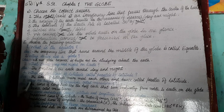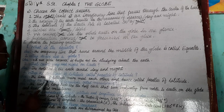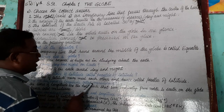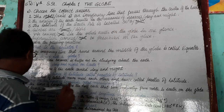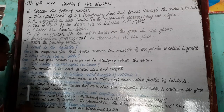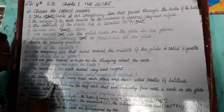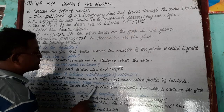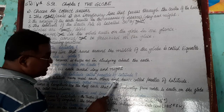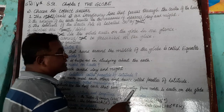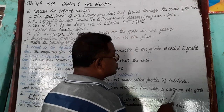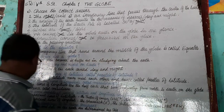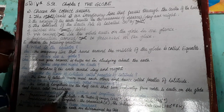Fifth question: Why are the lines of longitude called meridians? The lines of longitude are half circles that run vertically from north to south on the globe, and hence they are called meridians.